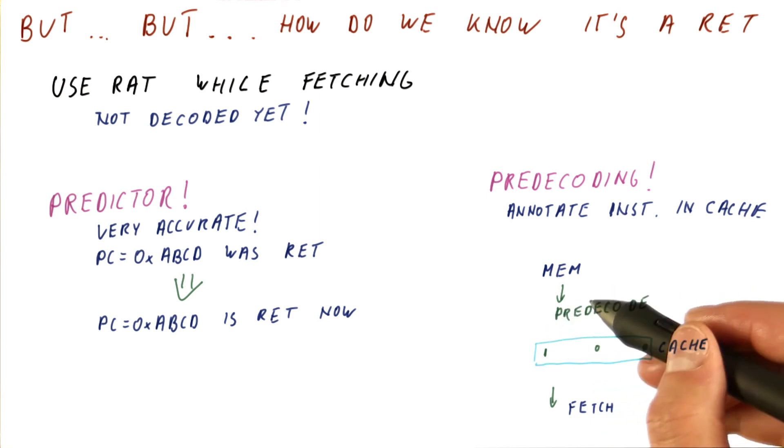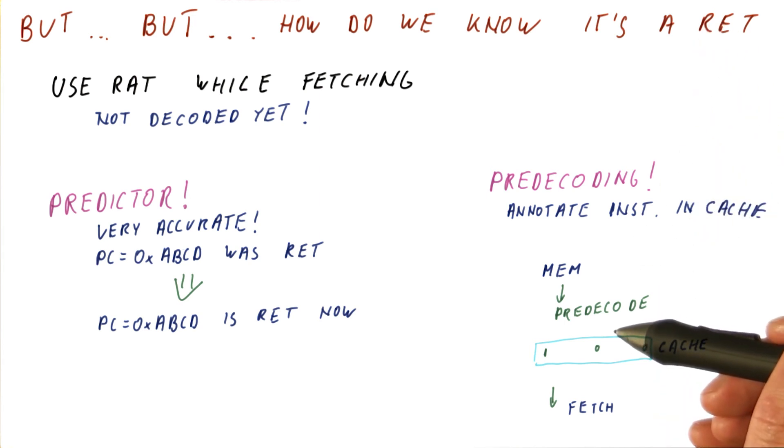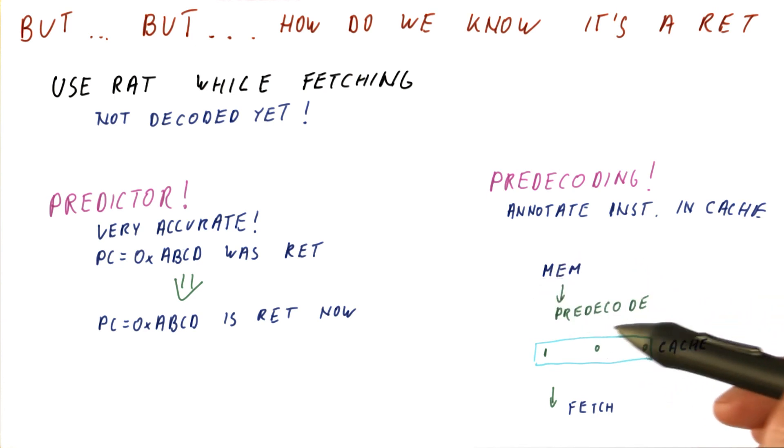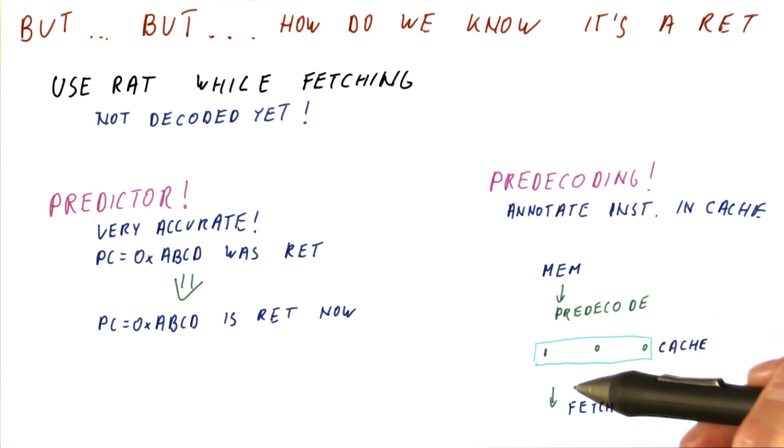So pre-decoding is used for things like, is it a return instruction? Is it a branch instruction at all? If we know it's not a branch, then we can completely omit the use of any branch predictors, thus saving a lot of power. If our instructions are of variable sizes, pre-decoding can also tell us, for example, how many bytes this instruction is long so that we can fetch the next instruction quickly and not rely on just decoding the instruction before we can fetch the next one, and so on.